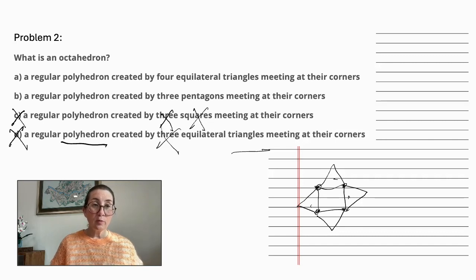B. A regular polyhedron created by three pentagons meeting at their corners. They are not pentagons, and there are four of them, so again, not the correct answer.